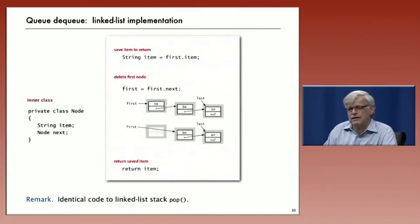So here's the implementation of dequeue. It's identical to the code for a pop for a stack. We save away the item. We delete the first node by advancing the reference. And then we return the item. So identical.